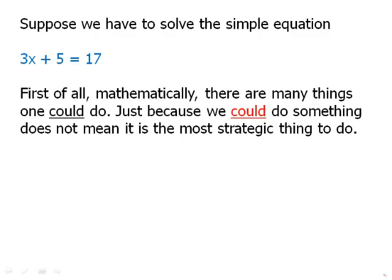First of all, mathematically, there are many things we could do. For example, it would be mathematically correct, say, to add 40 to both sides of the equation. Now, there'd be no reason to do that, but there'd be nothing in the laws of mathematics saying that that was a wrong thing to do. It would not be mathematically wrong, it would simply be strategically wrong.